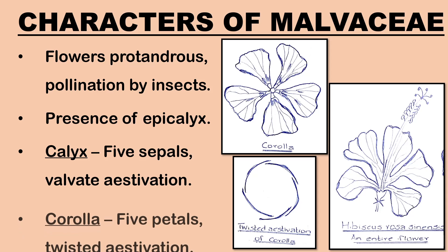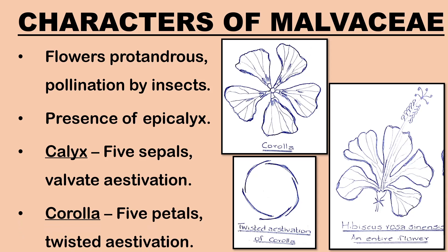Corolla consists of five petals which are either free (polypetalous) or slightly united at the base to the androecium. Petals usually have wrinkled, wavy edges. The aestivation is mainly twisted — that is, one margin of the petal overlaps that of the next one and the other margin is overlapped by the third one.